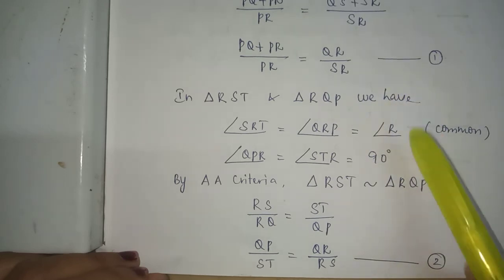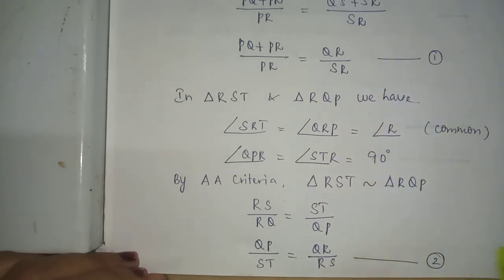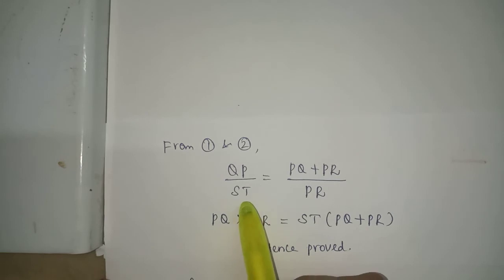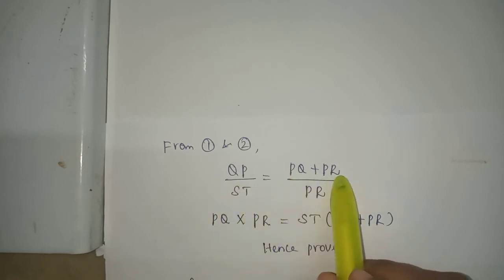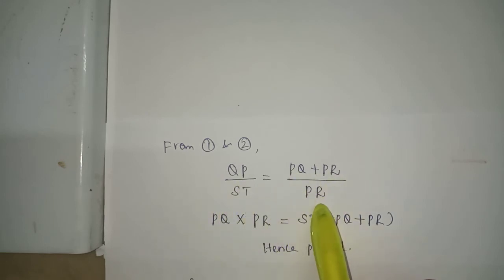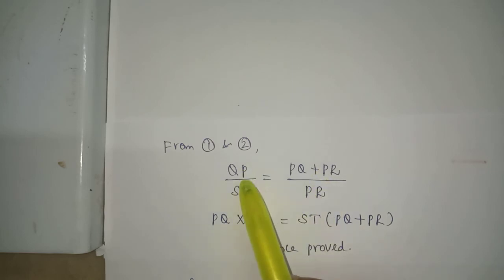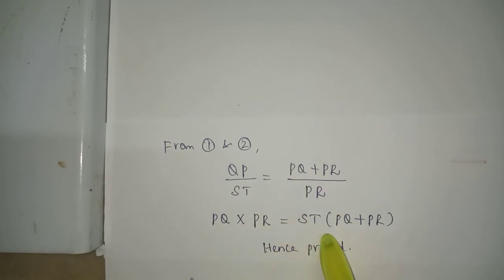From equations 1 and 2, QP by ST equals (PQ plus PR) by PR. Cross multiplying: PQ into PR equals ST into (PQ plus PR). Hence proved.